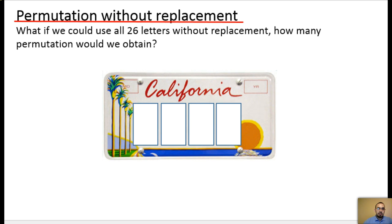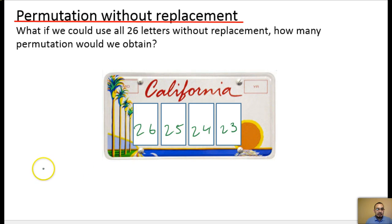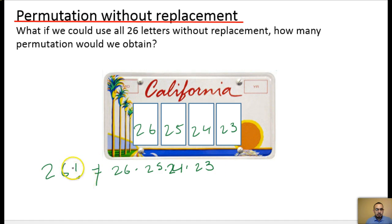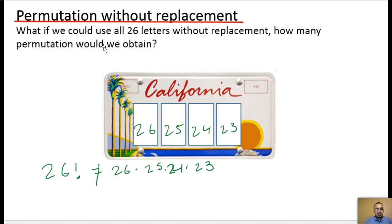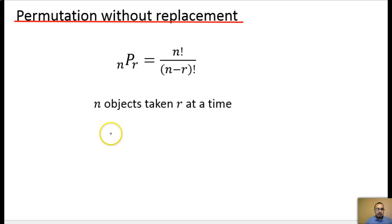What if we could use all 26 letters without replacement? How many permutations would we obtain? We'd have 26, 25, 24, 23 — but the question is: is this the same as 26 factorial? The answer is no. 26 factorial would go all the way down to 1, whereas this stops at 23. So that's an important distinction as we look at the permutations formula.